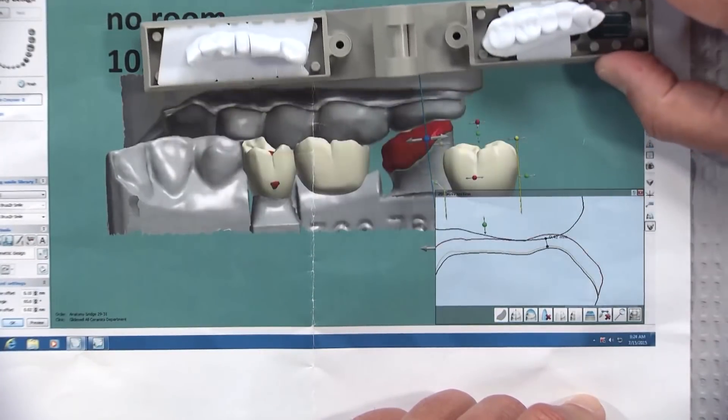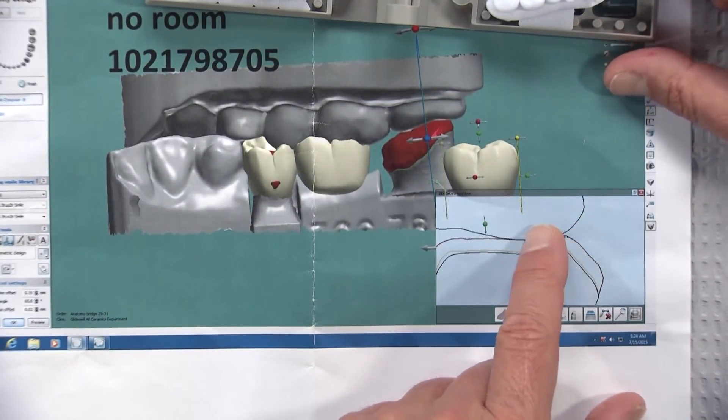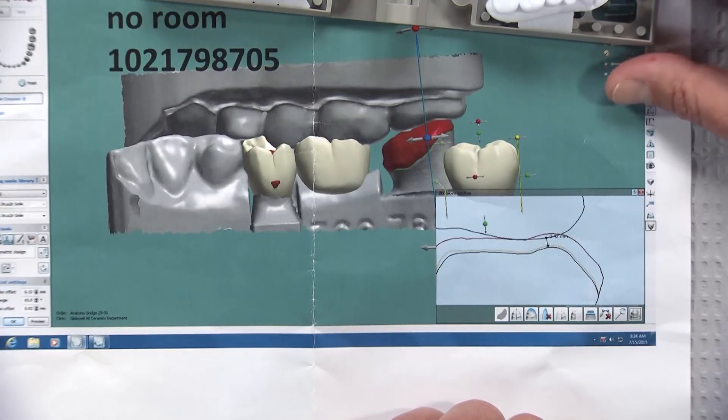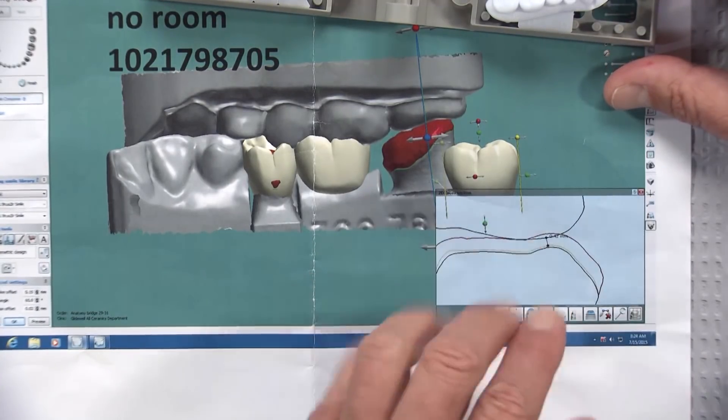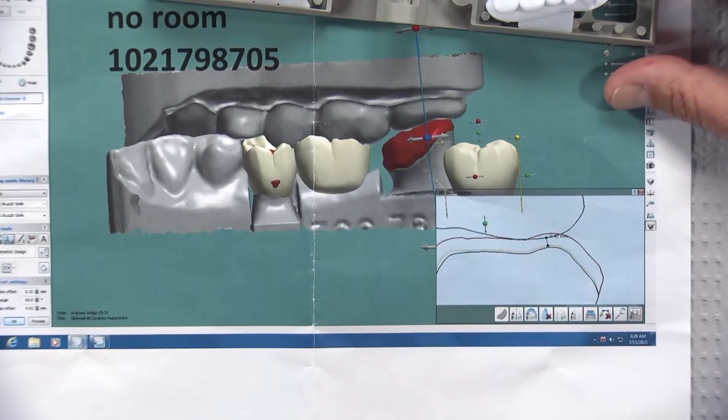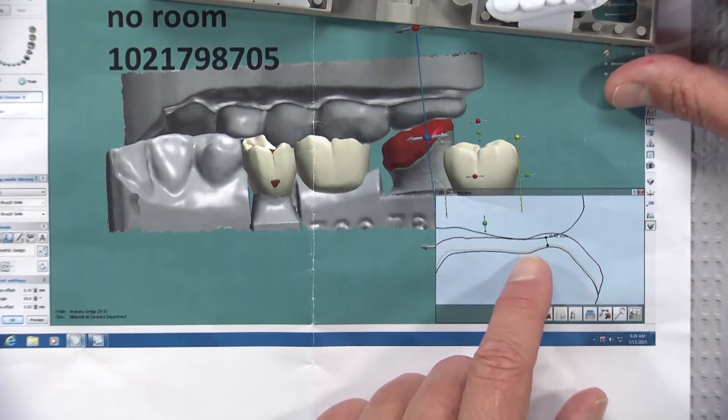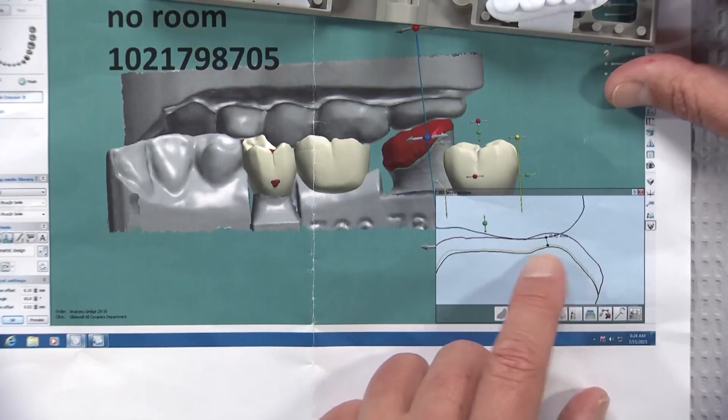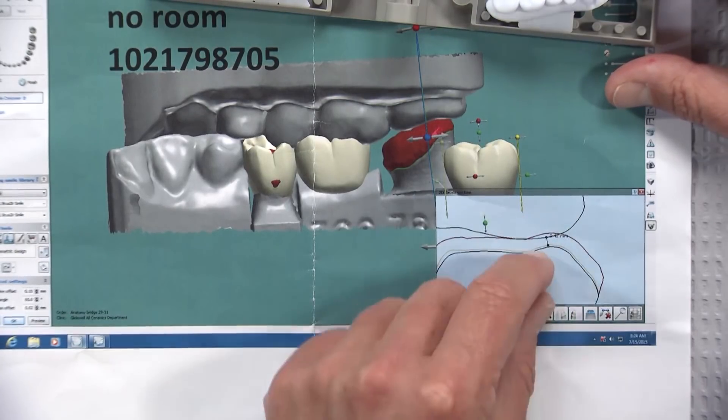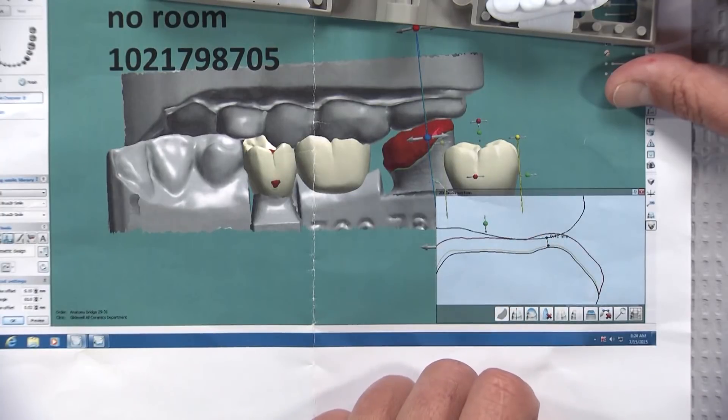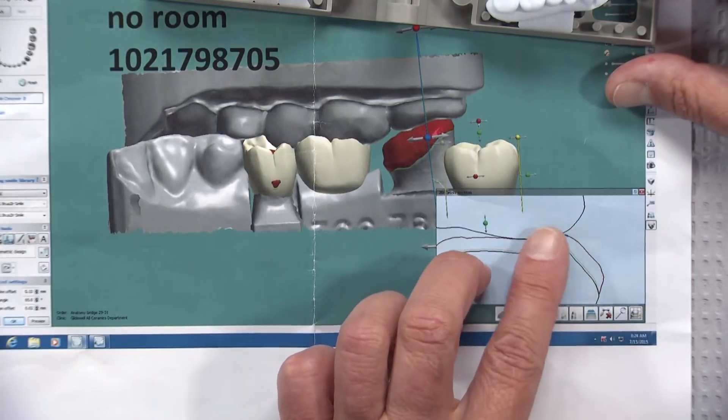As a result, he sent this to us and paid to have the model printed even though we don't have enough room here. When you can see this amount of under-reduction chairside while the patient's there and the patient's numb, this allows you to go back in and prep more on the tooth or prep on the opposing tooth if you wish, and then grab another image right here and be able to see whether or not you've accomplished the adequate reduction.